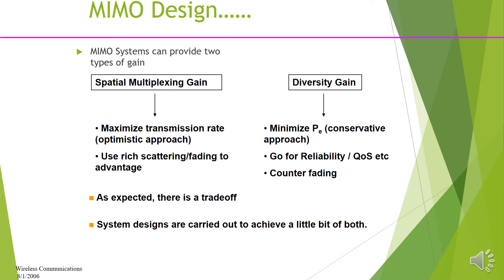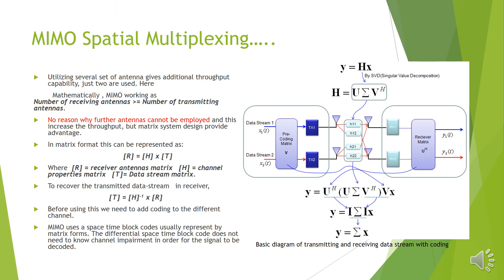Now we will talk about MIMO designing, focusing on two things: spatial multiplexing gain and diversity gain. Spatial multiplexing gain maximizes the transmission rate, whereas diversity gain minimizes the transmission rate, but our main focus is reliability. MIMO spatial multiplexing utilizes several sets of antennas and gives additional throughput capability. Here we are using just two antennas, but as our mathematical equation shows, the number of receiving antennas must be greater than or equal to the number of transmitting antennas. In matrix format, the receiver antennas matrix equals the multiplication of the channel matrix and the data stream matrix, and after finding the inverse, you can also find the transmitted data stream.